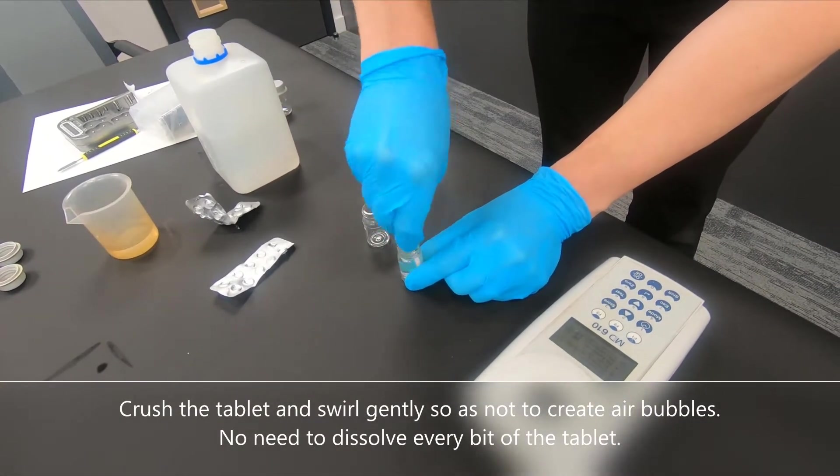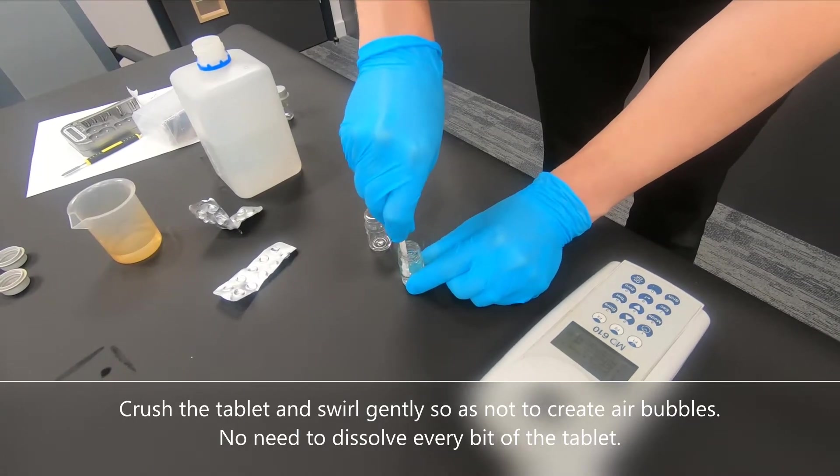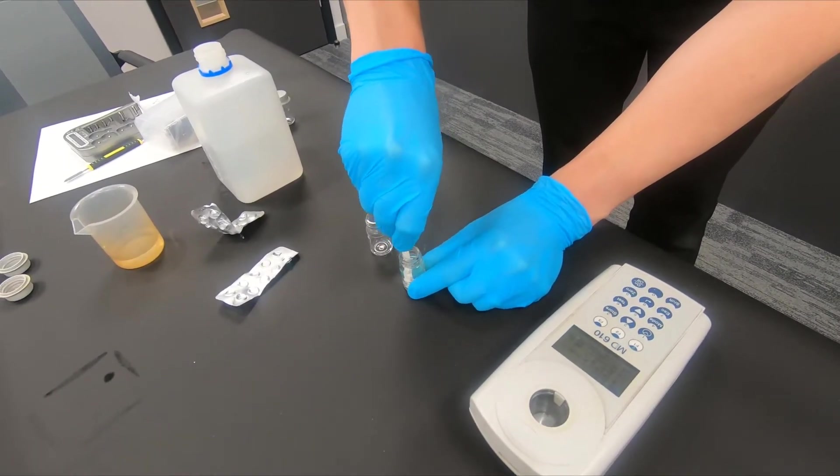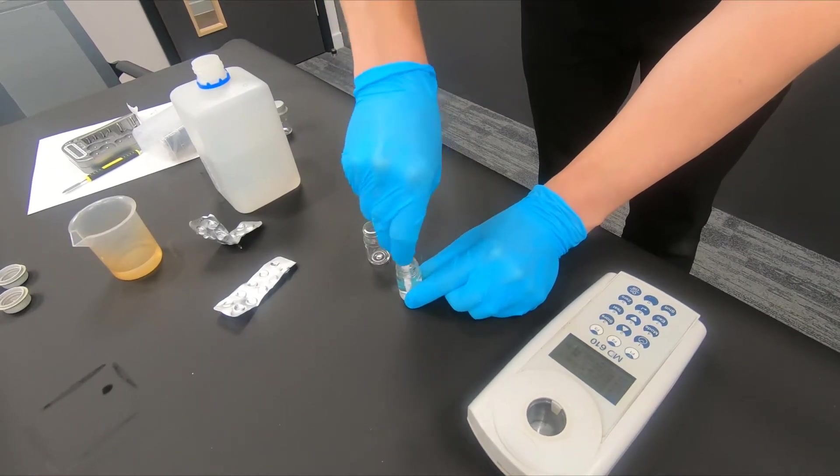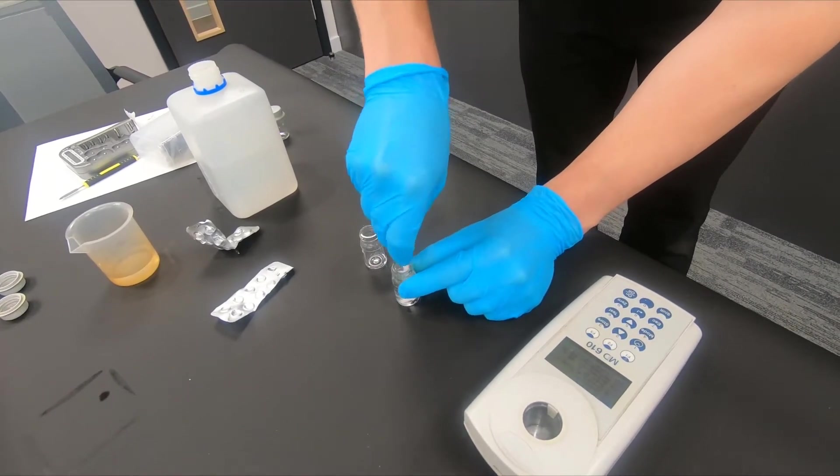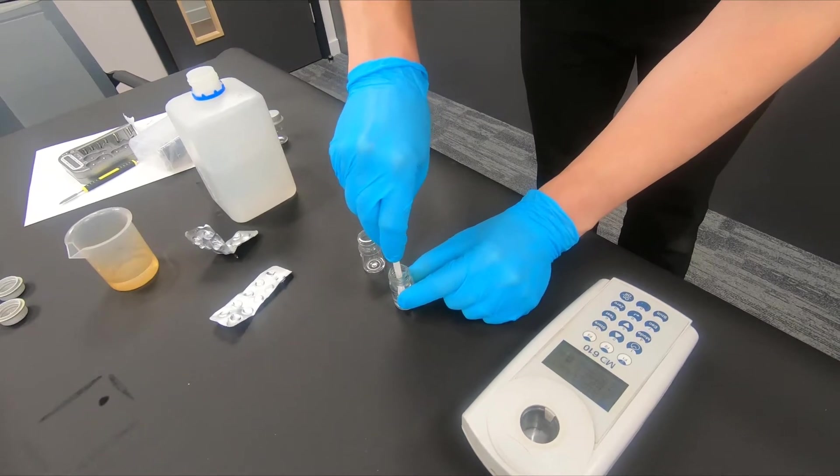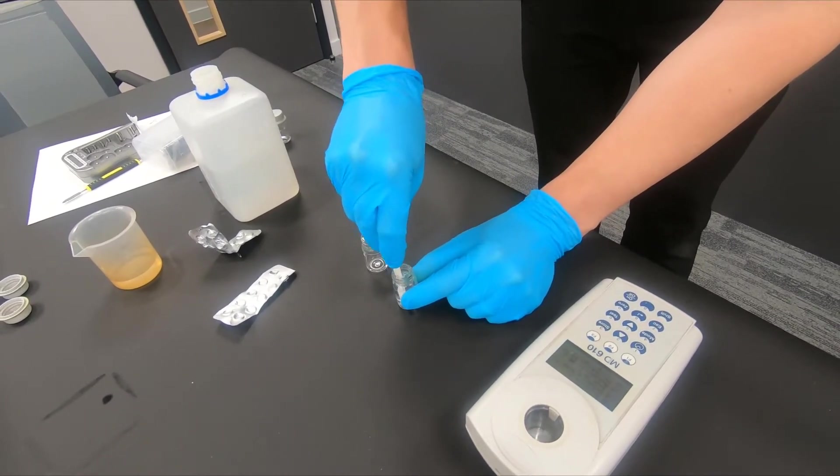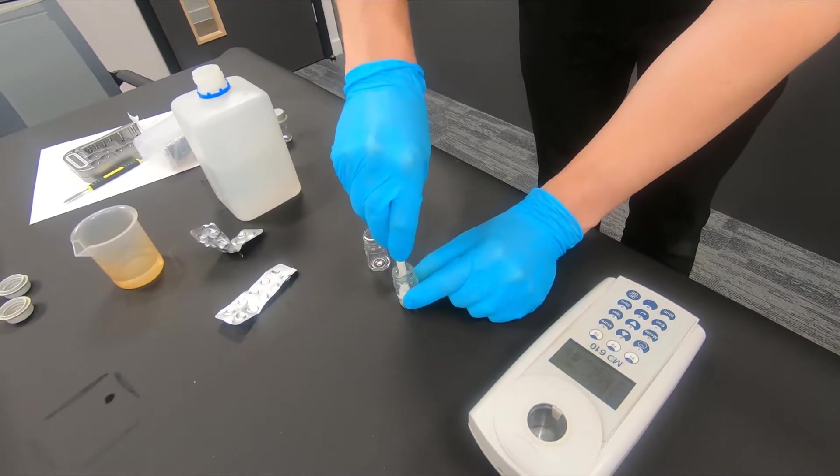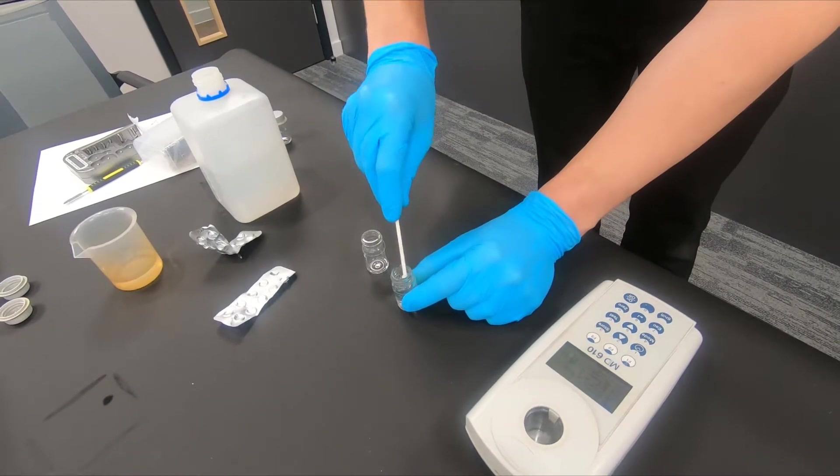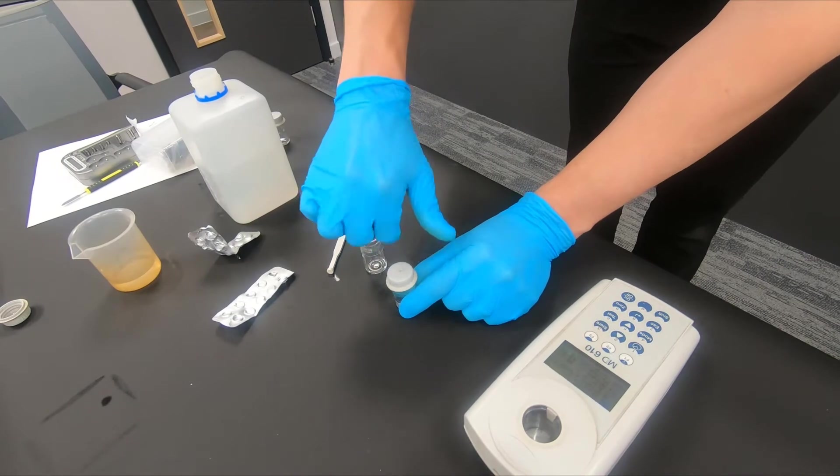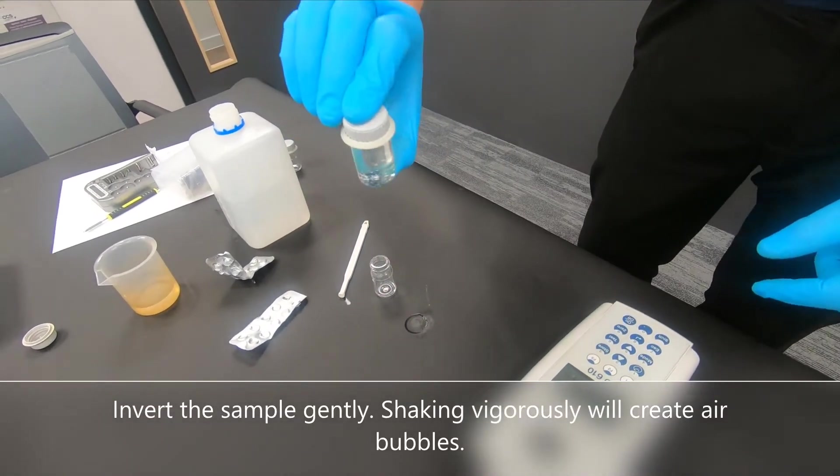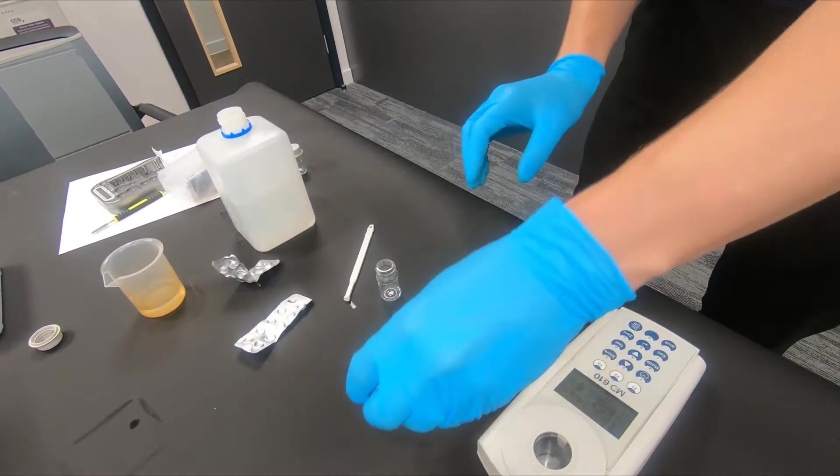Crush and swirl gently. Crush again and swirl gently. You should all go to the middle and crush again. You don't need to dissolve every bit of the tablet. Add the lid and invert a couple of times to mix.